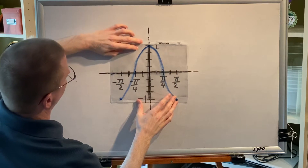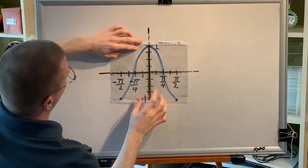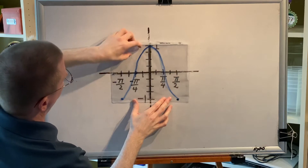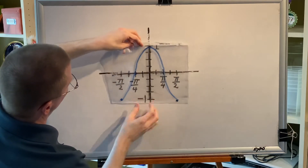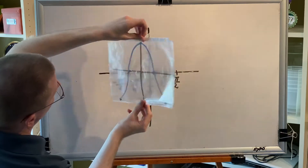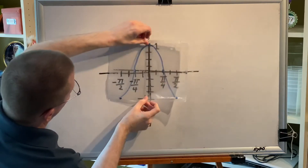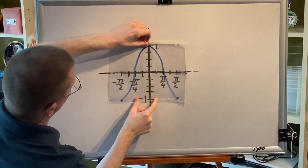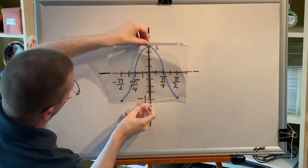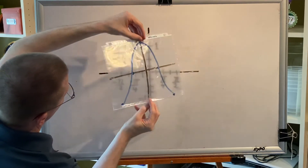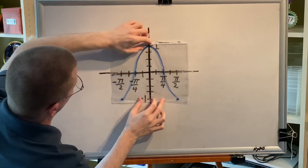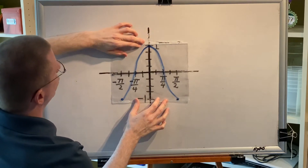Now we test for y-axis symmetry by rotating around the y-axis and comparing before and after. This looks like a mountain — this is the before. Spin it around the y-axis and it still looks like a mountain after. Same picture. So there is y-axis symmetry.